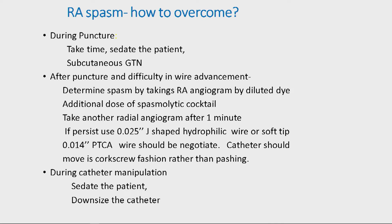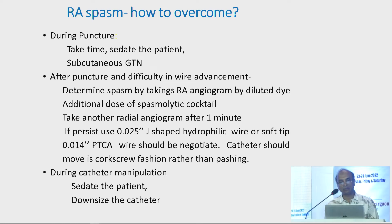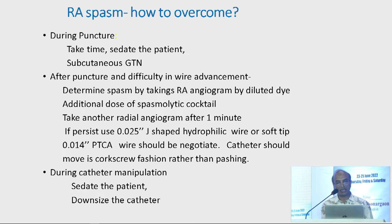How to overcome radial artery spasm: take time, sedate the patient, subcutaneous GTN may help during puncture. Confirm spasm by taking radial angiography with diluted dye, give an additional dose of cocktail, then try another catheter. If the spasm persists, we can use a 0.25 wire or a PTCI wire to negotiate it. During catheter manipulation, sedate the patient and downsize the catheter.